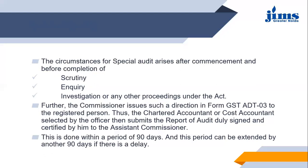The chartered accountant or cost accountant selected by the officer submits the report of audit duly signed and certified to the assistant commissioner. The final report needs to be submitted to the authorized person who gave permission for the audit. This is done within a period of 90 days, and this period can be extended by another 90 days if there is a delay. So the work initially needs to be completed within 90 days but can be extended by a further 90 days if required.